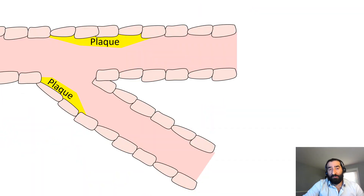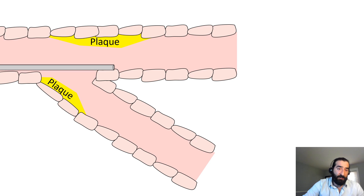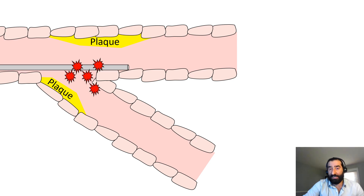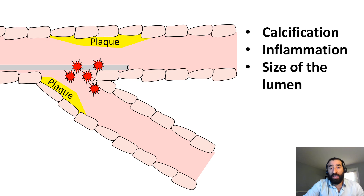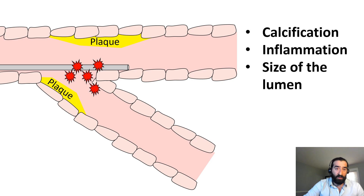For example, if you are treating a bifurcation, the region of the implant across the ostium will be high risk for thrombosis. In addition, if the region is precalcified, is inflamed, the size of the blood vessel lumen also plays a role in the risk of thrombosis.